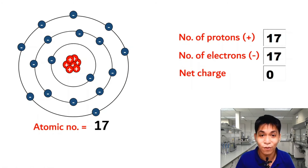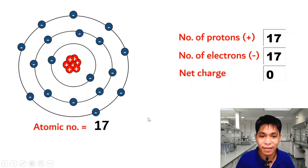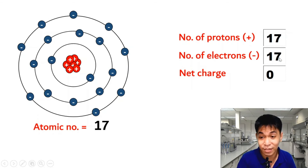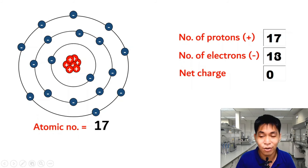This atom will look for one more electron, so we add an electron to our atom. If this atom gains an electron, it will now have 8 valence electrons. We did not change the number of protons, so protons remain 17. But since we added 1 electron, the number of electrons is now 18. The number of protons and electrons are no longer the same, so the net charge is no longer equal to 0.